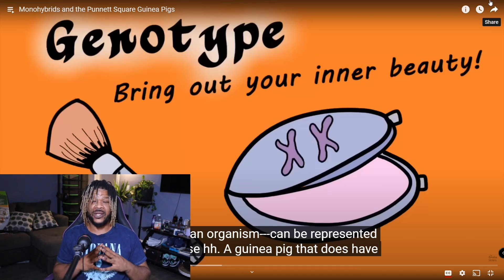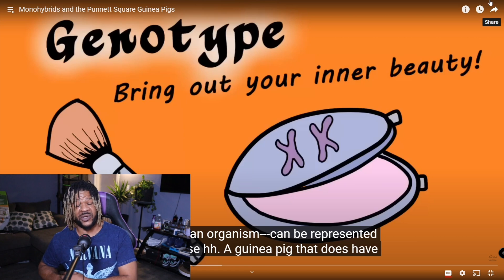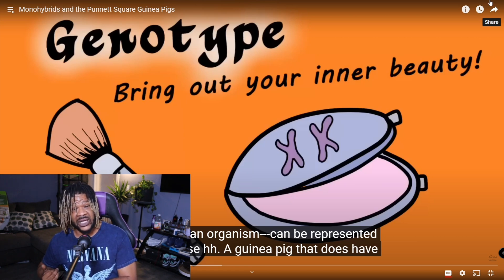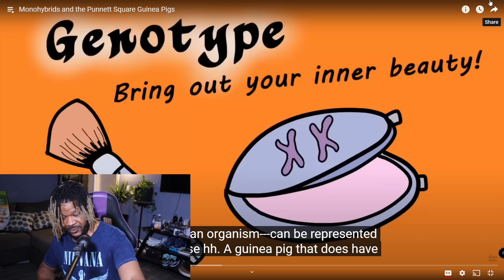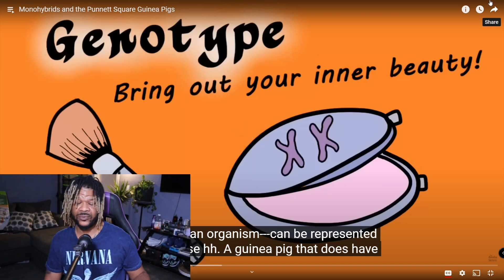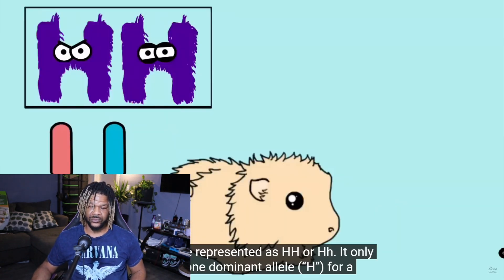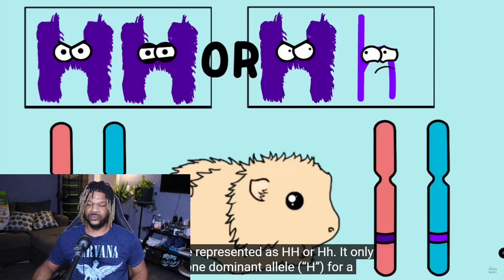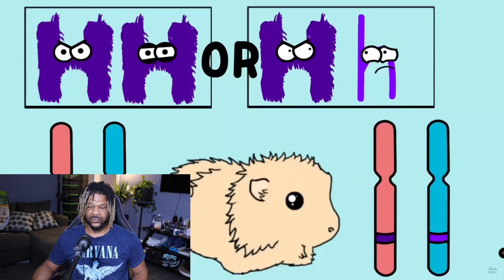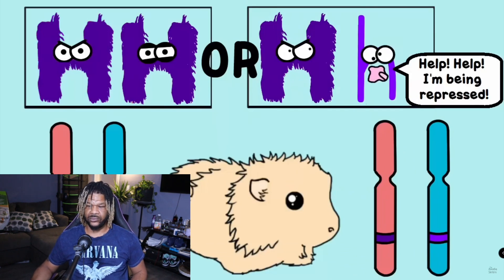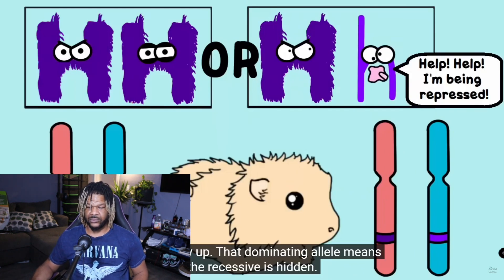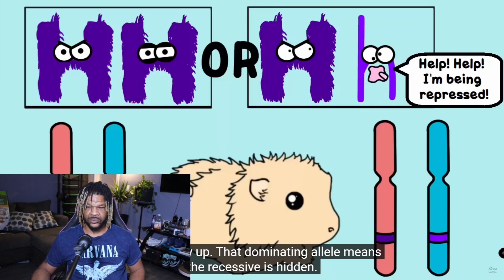Alright gang — language is everything, we know how important it is. So let's take notes. Several super important words that we use: allele, dominant — and that's why the allele is hidden. We're not quite done with the vocab here.